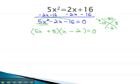The way we can solve it is setting each factor equal to zero. The 5x plus 8 equals zero, and the x minus 2 equals zero.